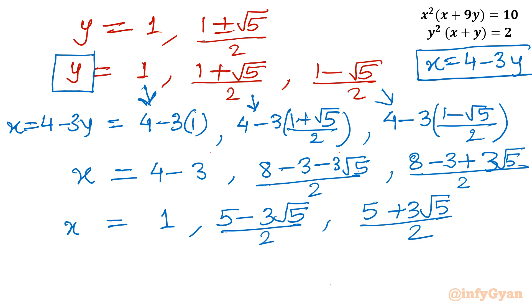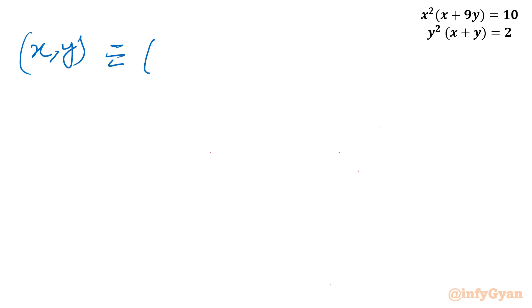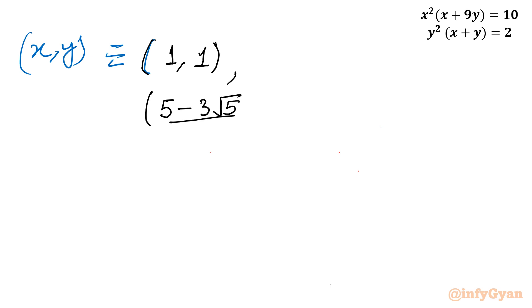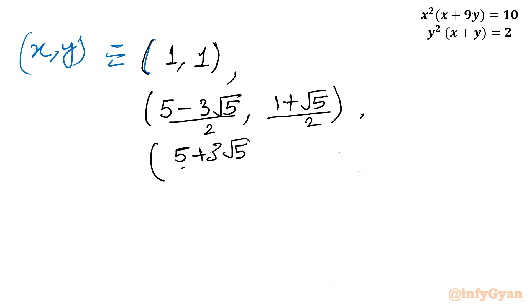Writing in the form of ordered pairs (x, y): the three real solutions are (1, 1); ((5 − 3√5)/2, (1 + √5)/2); and ((5 + 3√5)/2, (1 − √5)/2). So there are 3 real solutions.